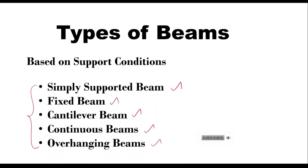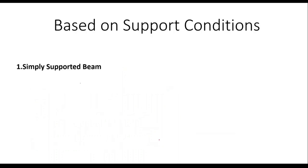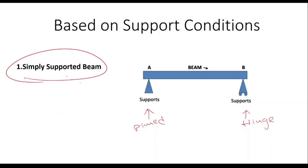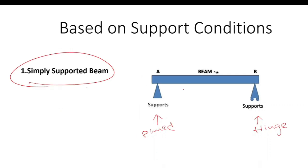A beam which is supported at both ends, with one end typically pinned and the other end supported by a roller or hinge, is called a simply supported beam. The basic characteristic of a simply supported beam is that it allows rotation but not translation at the supports.